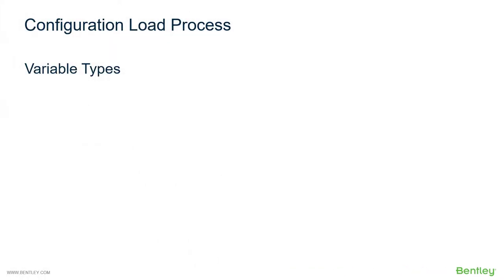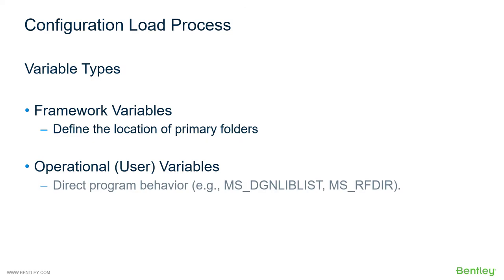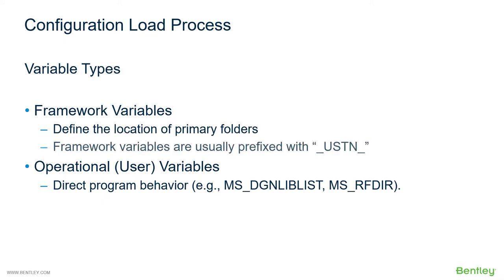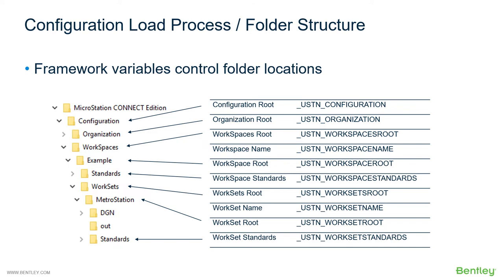MicroStation has two main types of configuration variables: framework variables and operational variables. Framework variables define the location of primary folders, while operational variables direct program behavior. Framework variables are usually prefixed with _ustn_, and user variables are usually prefixed with ms_. Framework variables control folder locations.